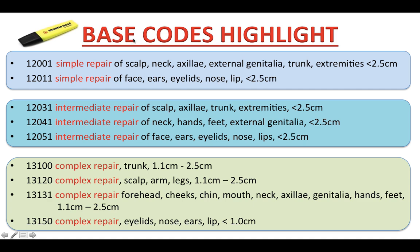Do you recognize the pattern? They are in the same repair classification — simple repair — but the CPT code description groups the anatomical sites so you can add the lengths together. Next, these are the base codes for intermediate repair. 12031: intermediate repair of scalp, axilla, trunk, and extremities (arms and legs), less than 2.5 cm. 12041: intermediate repair of neck, hands, feet, and external genitalia, less than 2.5 cm. 12051: intermediate repair of face, ears, eyelids, nose, and lips, less than 2.5 cm. Do you see the pattern? They are all the same repair classification — intermediate repair — but CPT lists the sites you can add within the same code.